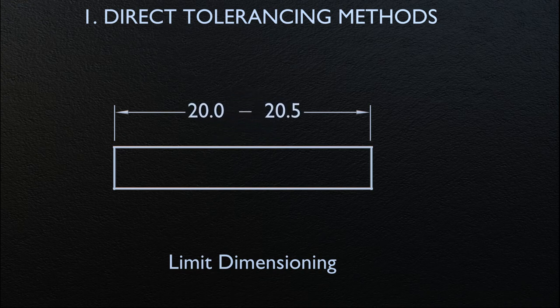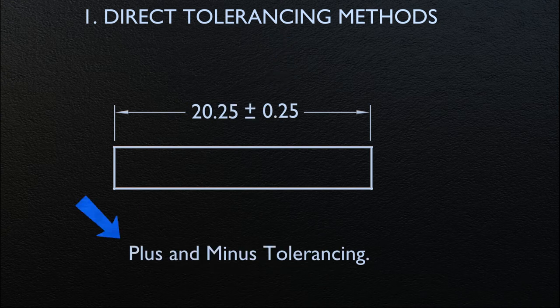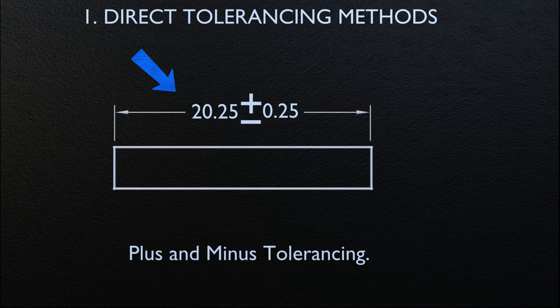When expressed in a single line, the low limit precedes the high limit, and a dash separates the two values, as illustrated on the screen. For plus and minus tolerancing, the dimension is given first and is followed by a plus and minus expression of tolerance.